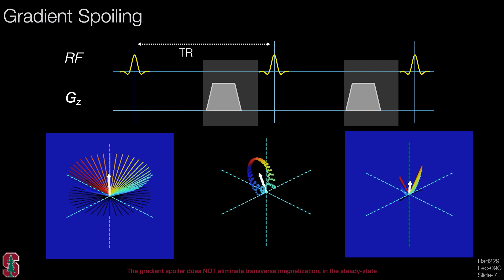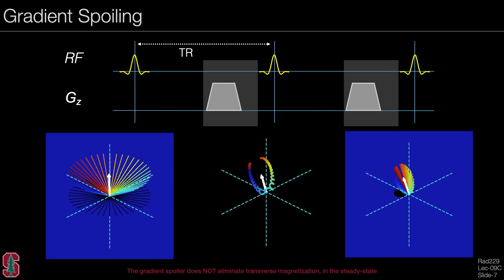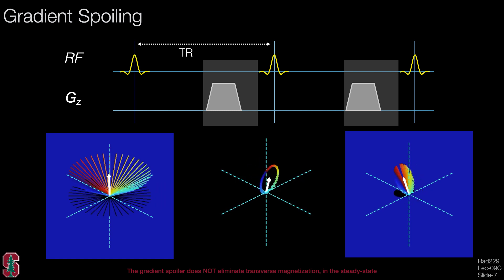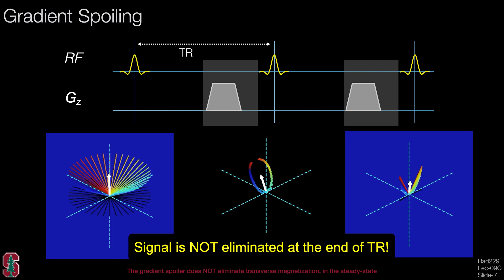The steady state is quite familiar. The magnetization has a distribution within a plane before and after the RF pulse, following an elliptical pattern just like in balanced SSFP. A key point is that the signal is not eliminated by the spoiler gradient at the end of the TR. Prior to and immediately following the tip, there is definitely a net signal, as indicated by the white arrow.